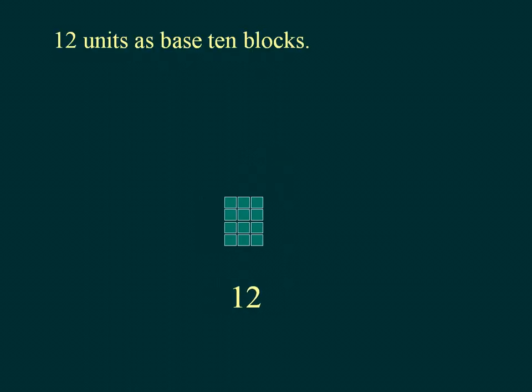Let us regroup the units as base 10 blocks. 3 multiplied by 4 is equal to 12, which is equal to 10 plus 2.